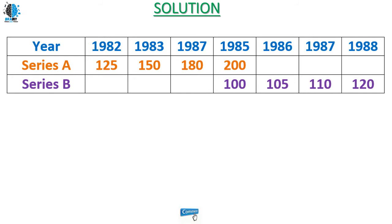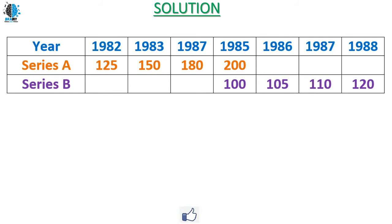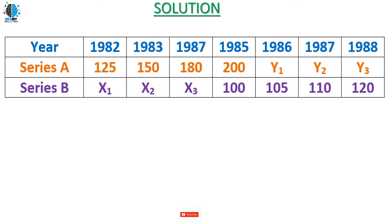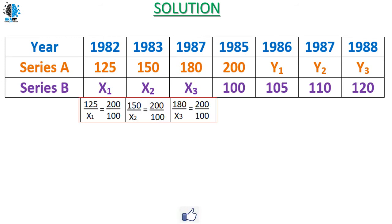Here is the solution. The observation table has two series: series A shown in orange and series B shown in purple. We need to find the index numbers for series A for 1986, 1987, and 1988 (labeled Y1, Y2, Y3), and for series B for 1982, 1983, and 1987 (labeled X1, X2, X3). So we need to find the values of X1, X2, X3 and Y1, Y2, Y3.